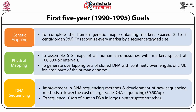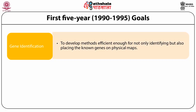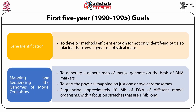It also involved sequencing of 10 MB of human DNA in large uninterrupted stretches. The second goal was gene identification, which involved development of methods efficient enough for not only identifying but also placing known genes on physical maps. The third goal was the mapping and sequencing of genomes of model organisms, involving generation of genetic maps of the mouse genome and starting physical mapping on just one or two chromosomes.